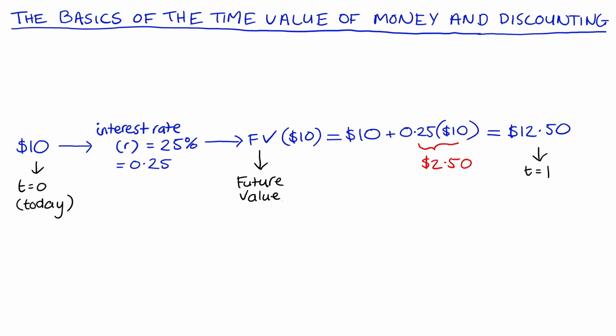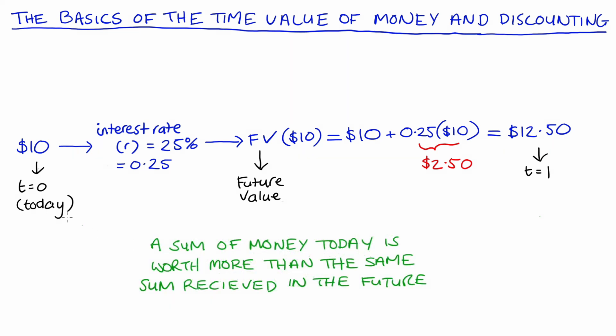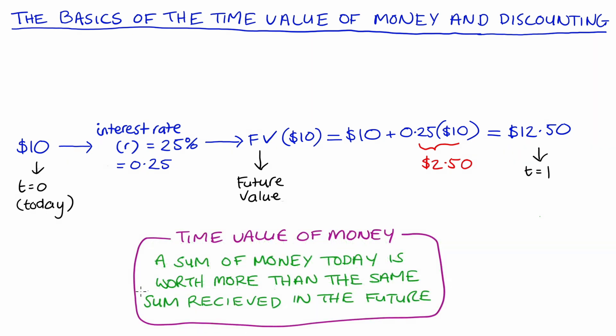The general lesson here is that we can invest money we have currently and earn interest from it. It follows from this that a dollar today is worth more than that same dollar given in a year or more generally any time in the future, because the dollar today I can invest and earn interest on, but I can't invest in and earn interest on monies I don't have yet. This concept — that a sum of money received today is worth more than that same sum received in the future — is called the time value of money.